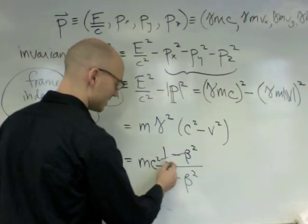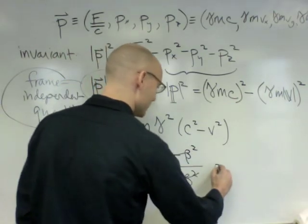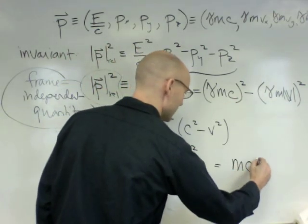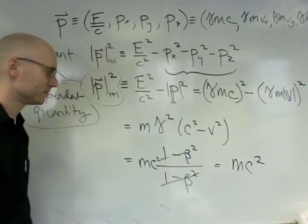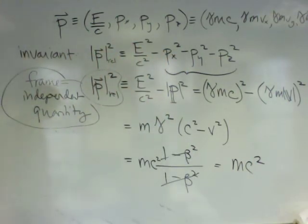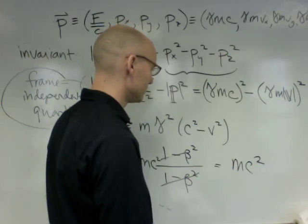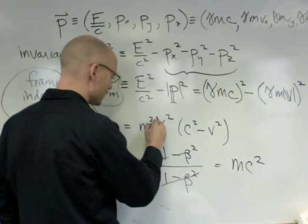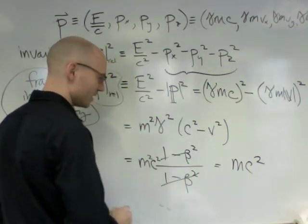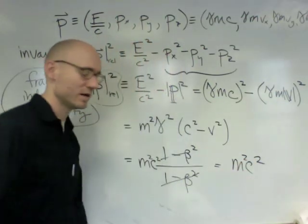Nice. That kills that. And it's mc squared. Oops. I've made some kind of mistake. Oh, no, that's correct. The only thing that I've done wrong is this m should be an m squared, this m should be an m squared, and this should be m squared c squared. Thank you.